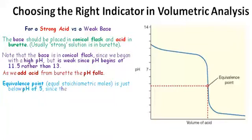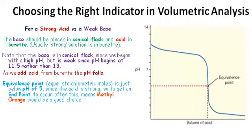The equivalence point, where we get equal stoichiometric moles according to the equation, is just below 5. The reason for this is because the acid is strong within the base.